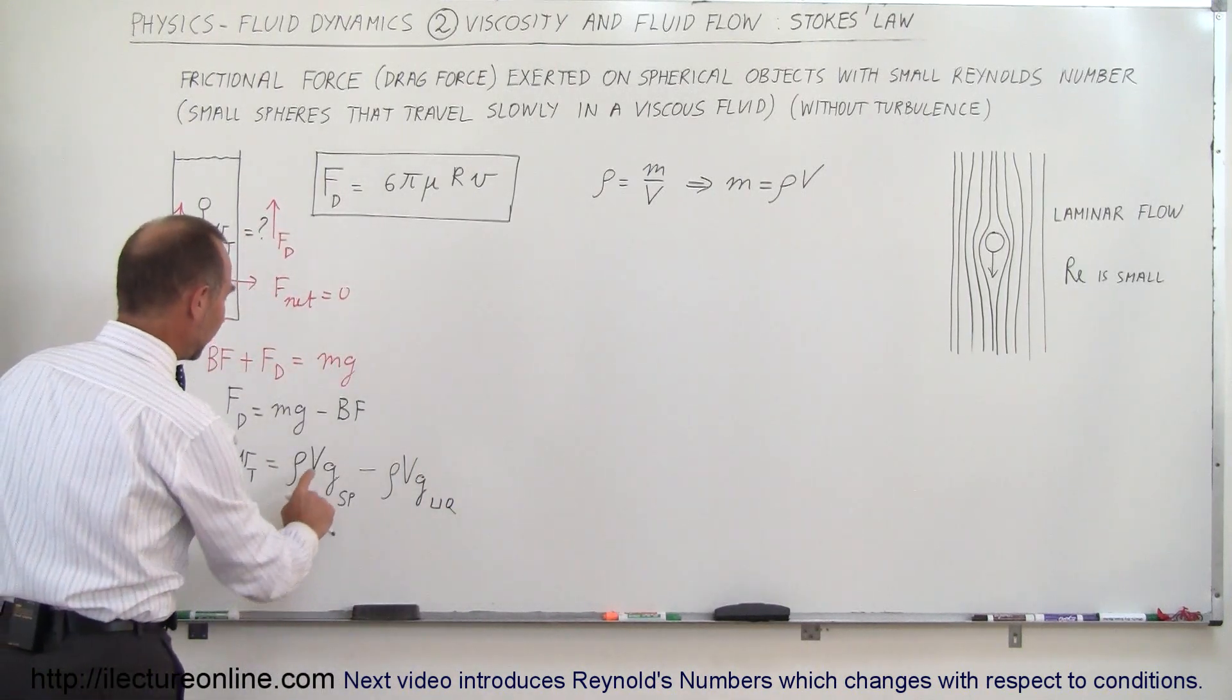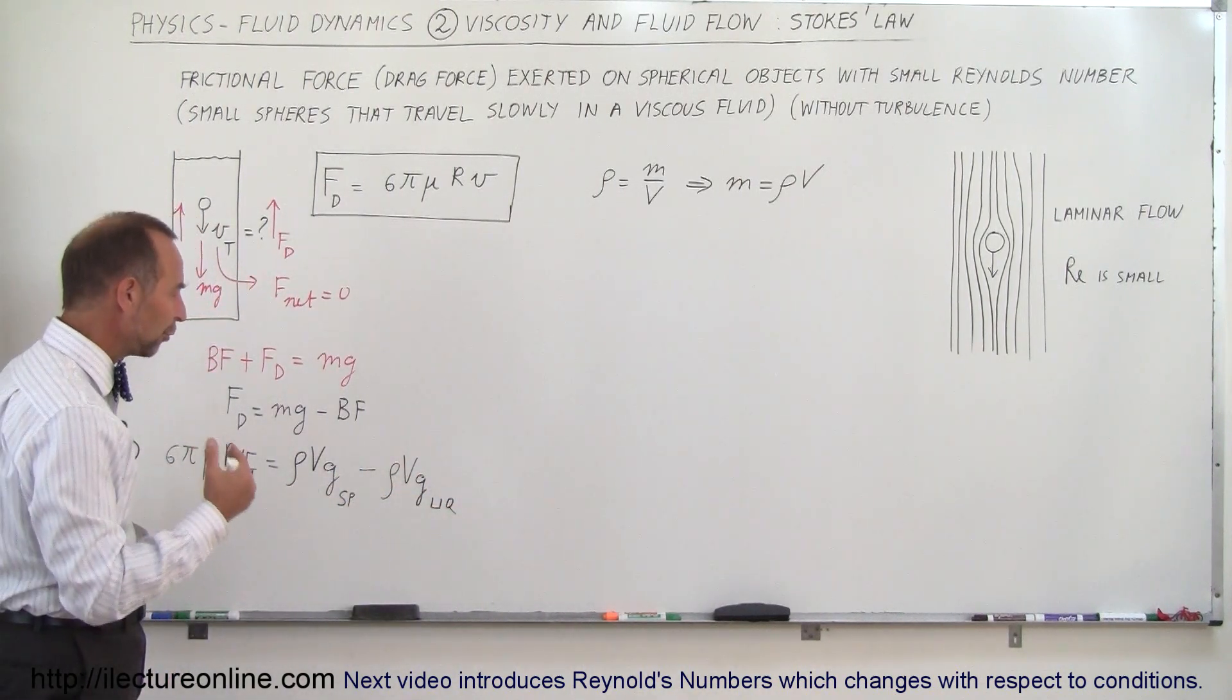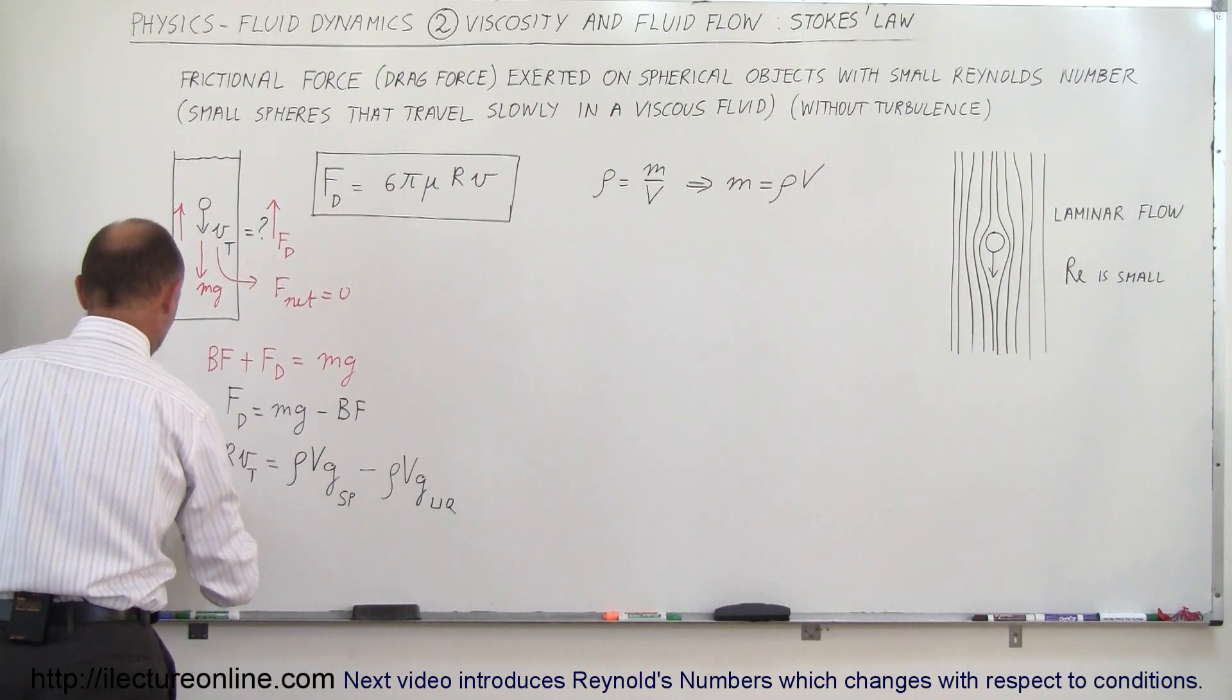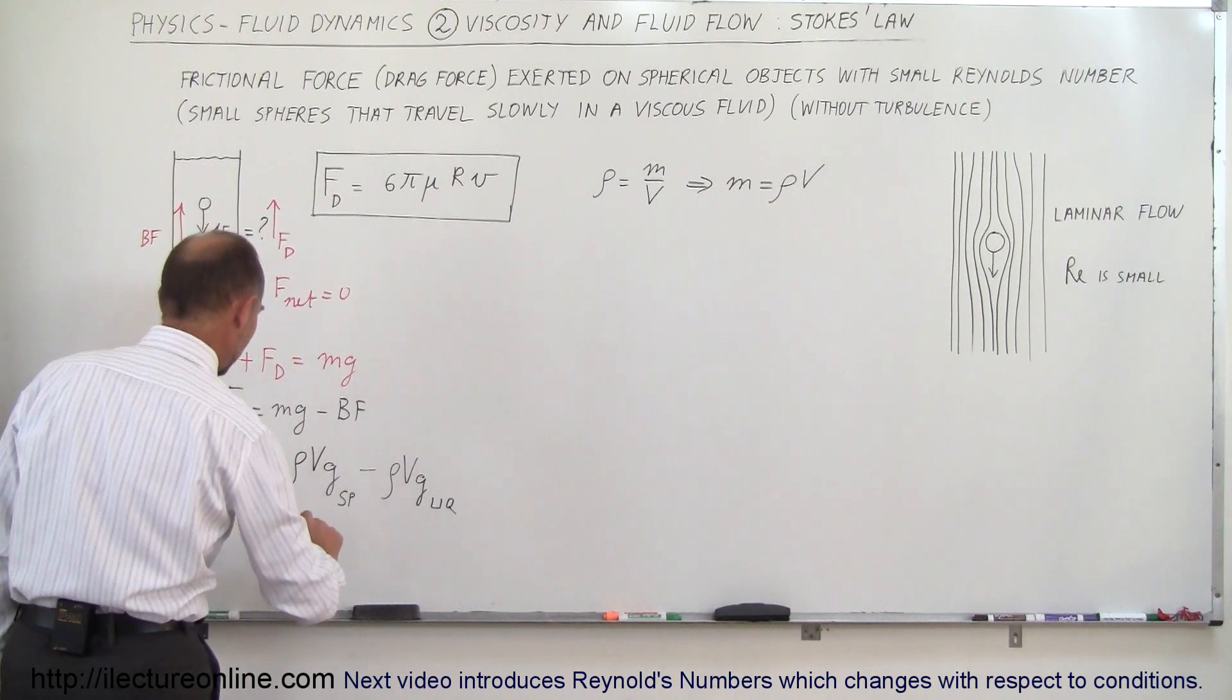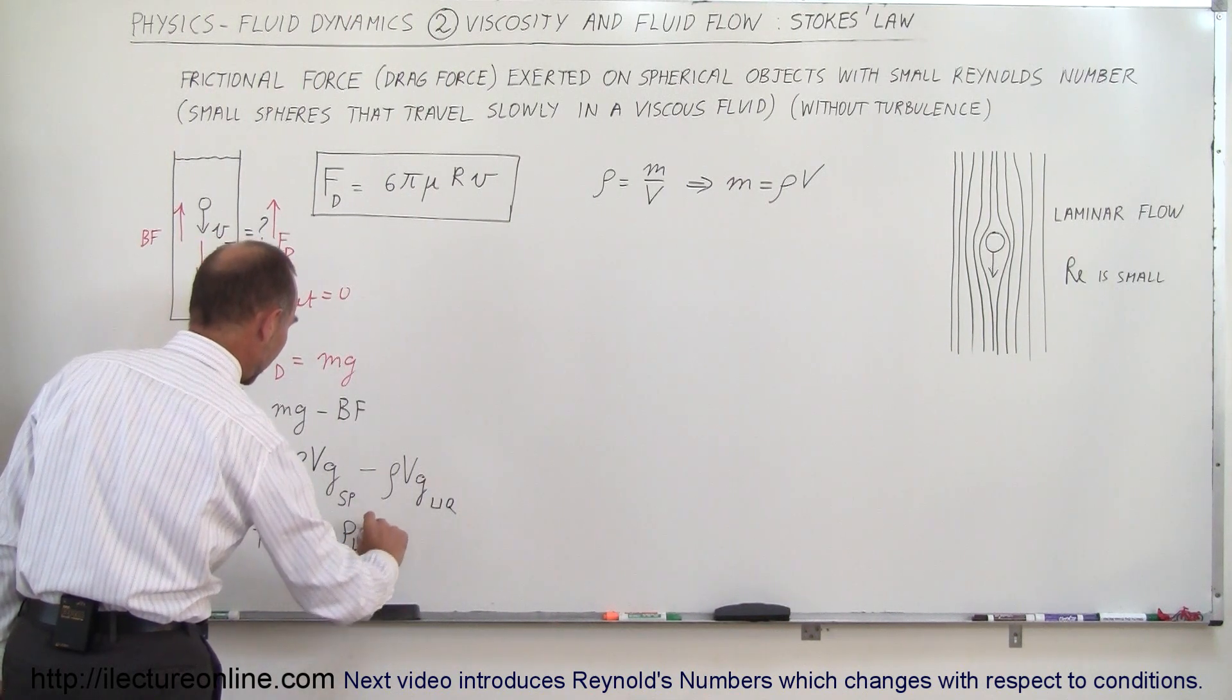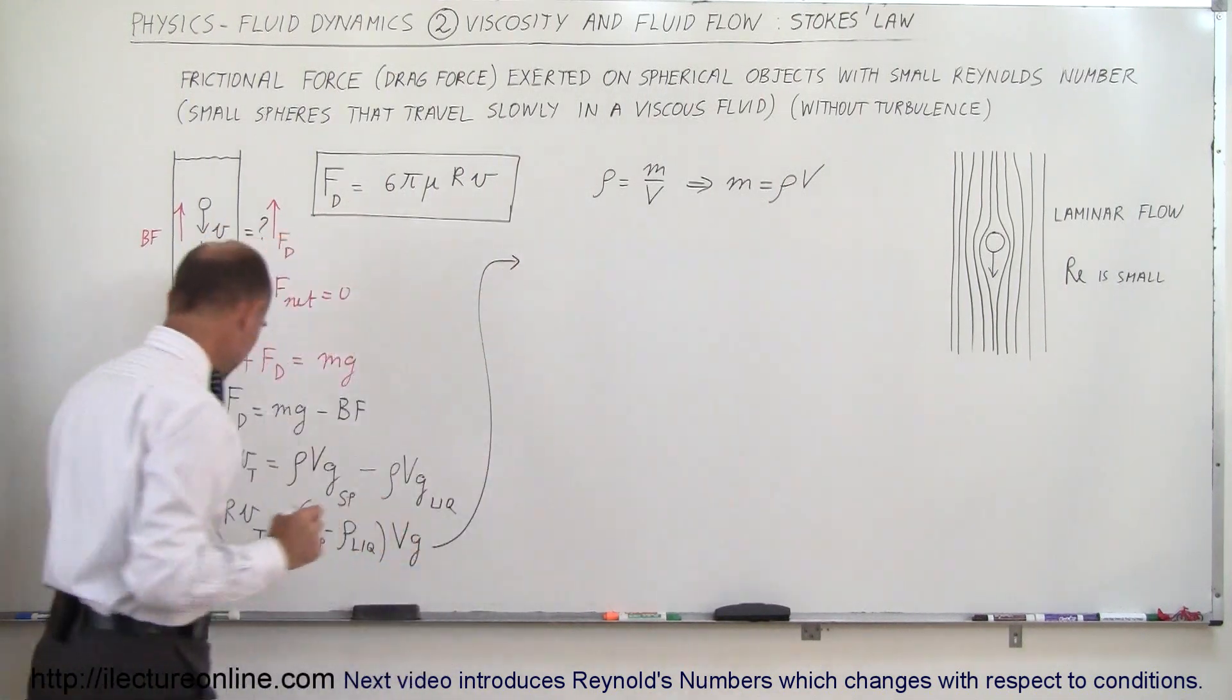All right, so the volume is the same for both, g is the same for both of course, it's the constant of gravity. Remember, the volume of the sphere is 4/3 πr³. So let's go ahead and factor out Vg, and that means we have 6πηrv_terminal equal to the density of the sphere minus the density of the liquid multiplied times the volume times g.